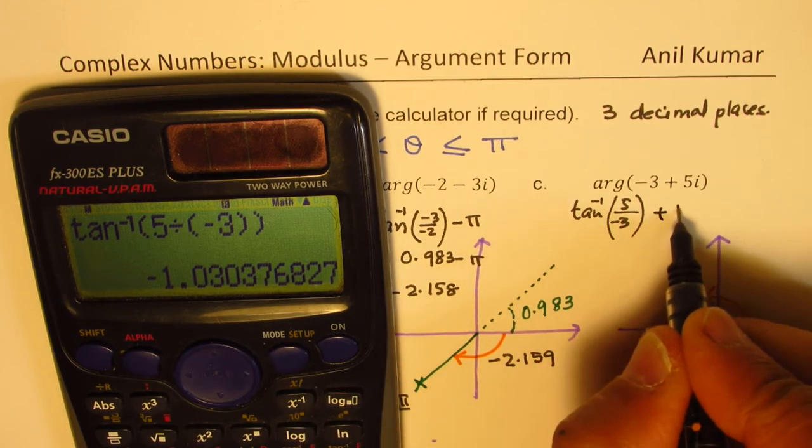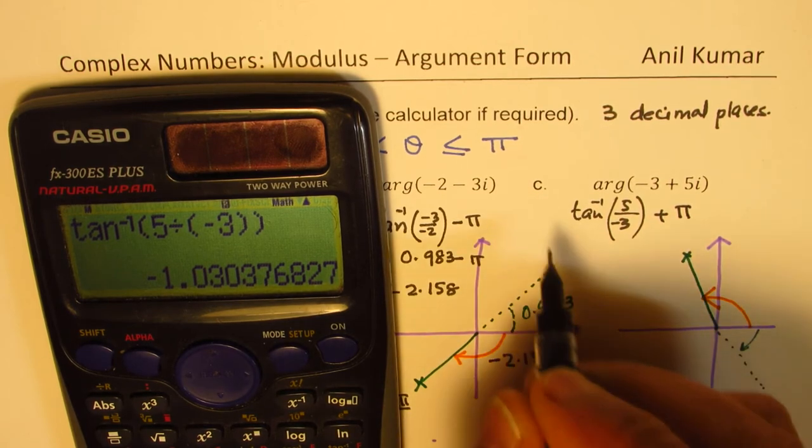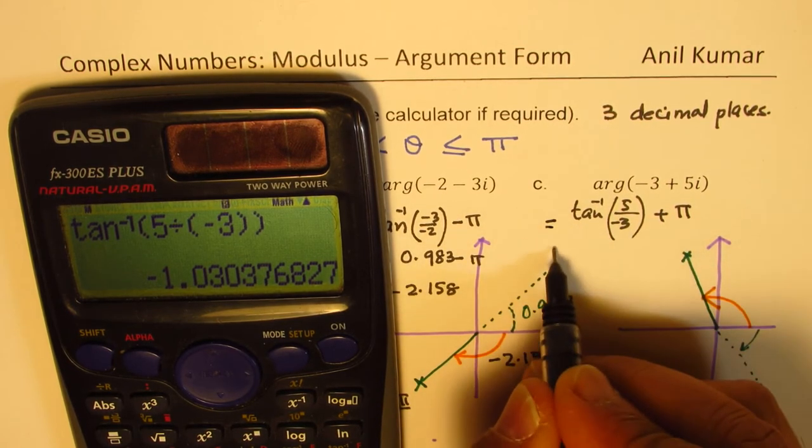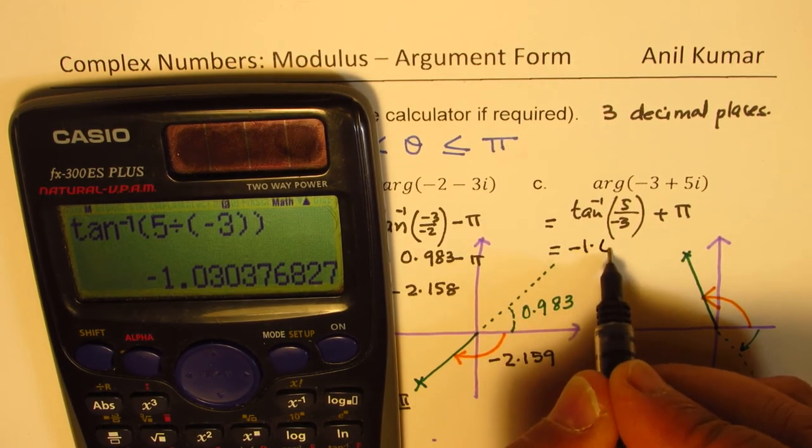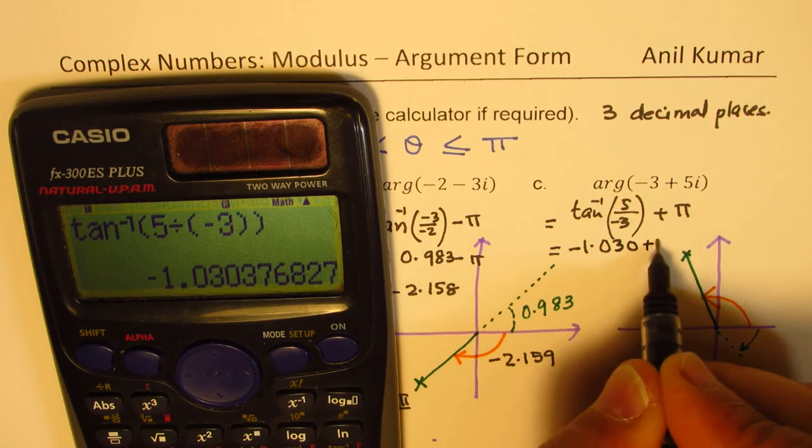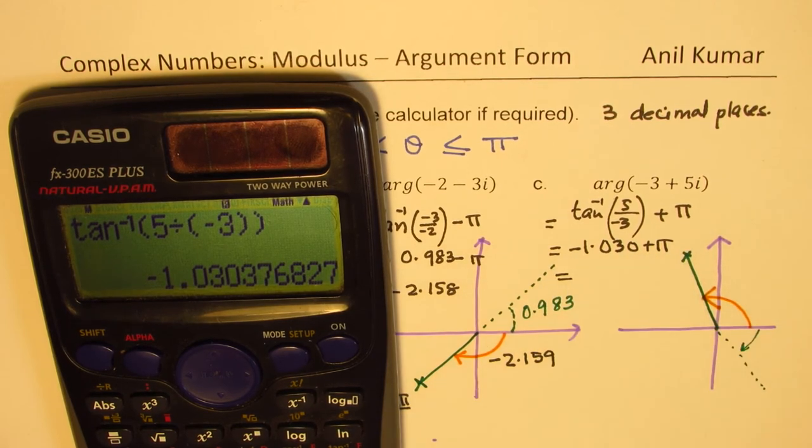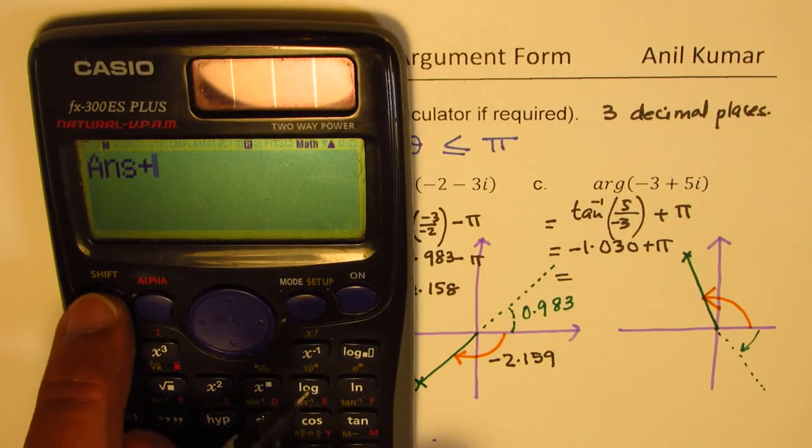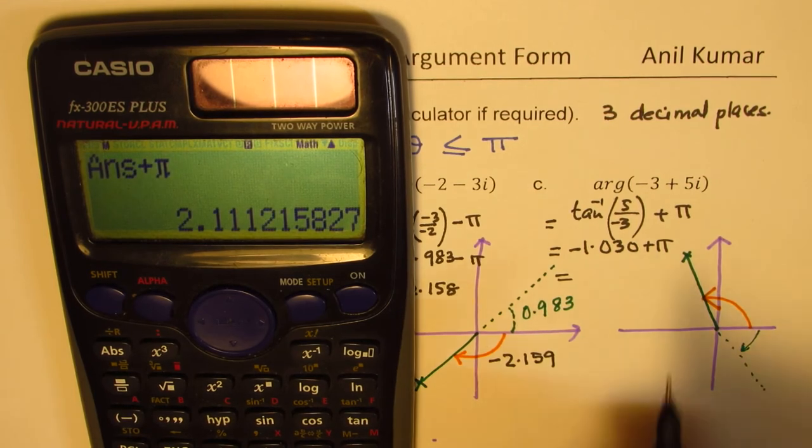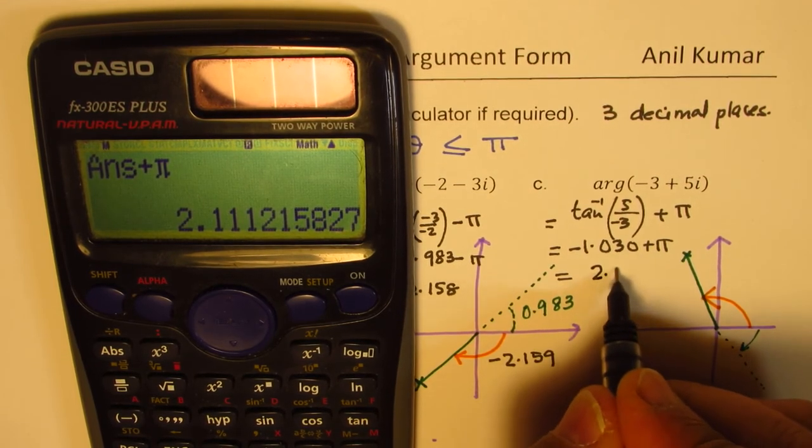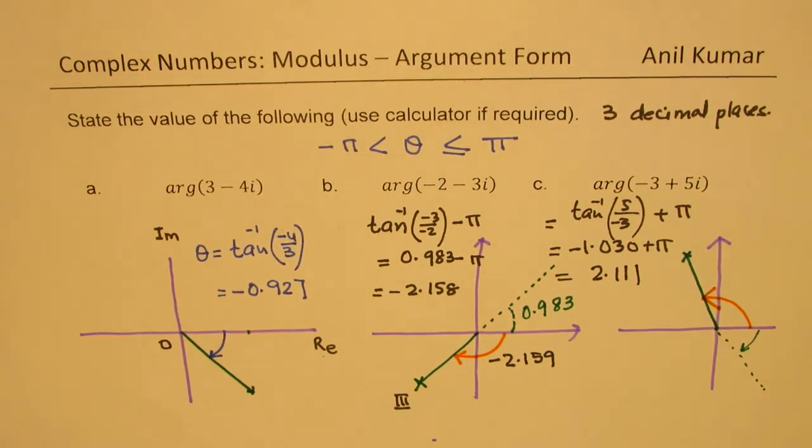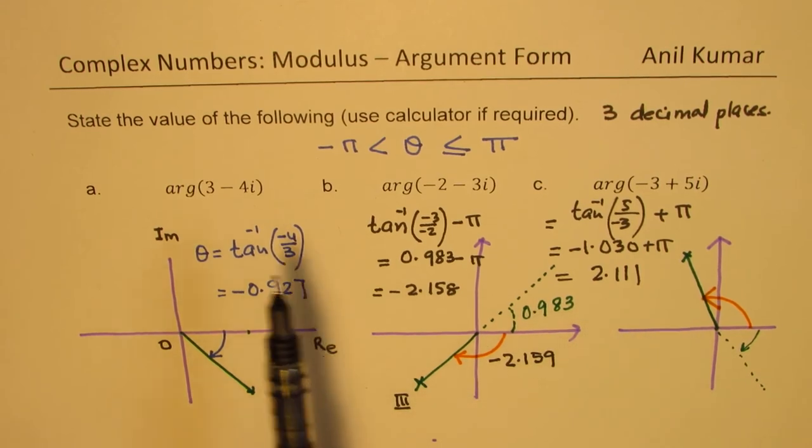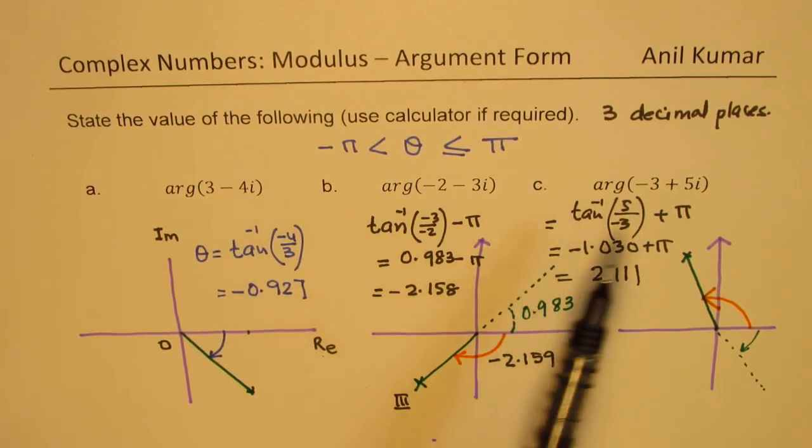So this is the answer which they are giving, minus 1.03, which is wrong. Actually speaking, we have to add π to get the correct answer. So to find the argument, it's important to add π. So we have minus 1.030. We'll add π to this to get the correct answer. This answer now is 2.111. So that is how using calculator, you can find the correct value for the arguments.